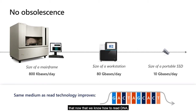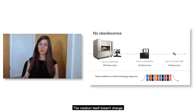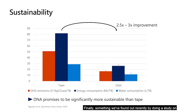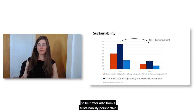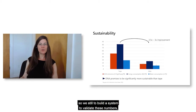Another property of DNA is that now that we know how to read DNA, we'll always be able to read it. The medium itself doesn't change — it's just the DNA. But the readers can improve independently of the medium, which is not the case for other types of commercial medium. Finally, a recent sustainability study shows that DNA promises to be better from a sustainability perspective — the greenhouse gas emissions, energy consumption, and water consumption to store one terabyte per year will be lower for DNA.